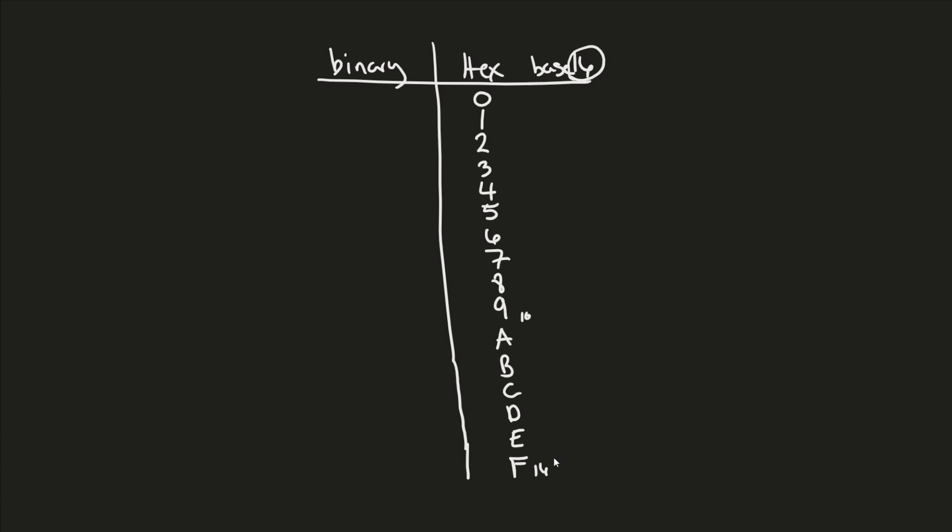Now you understand what hex is — it's a numbering system that goes from zero to F, in that order. That's really all you need to know about hexadecimal. But why is it so useful? Right now it doesn't look that useful — you have to memorize that it goes from zero to nine and then A to F. But let's look at the binary equivalents.